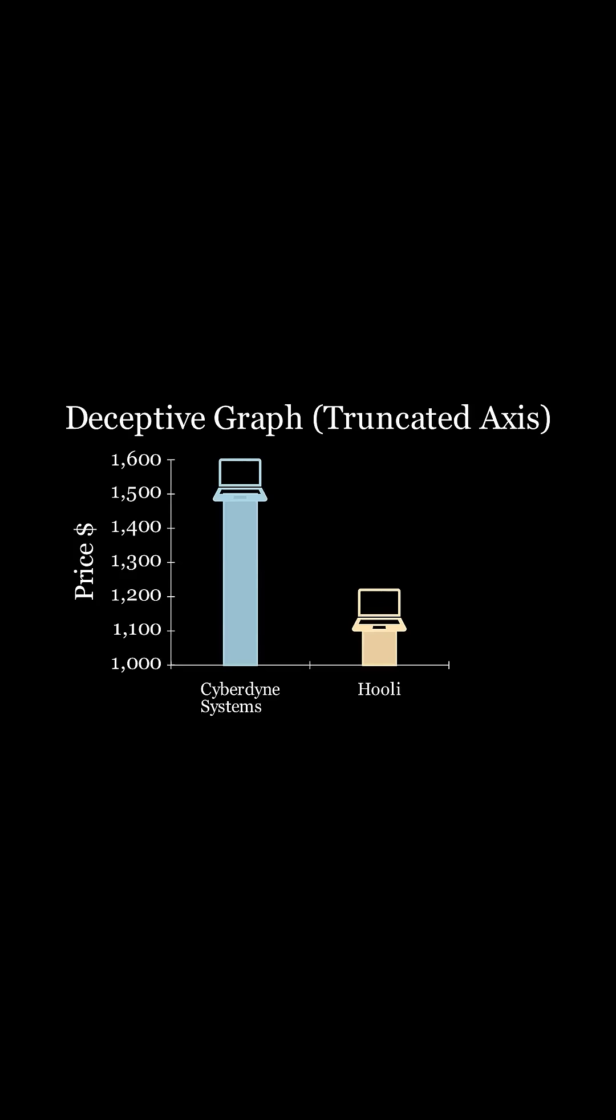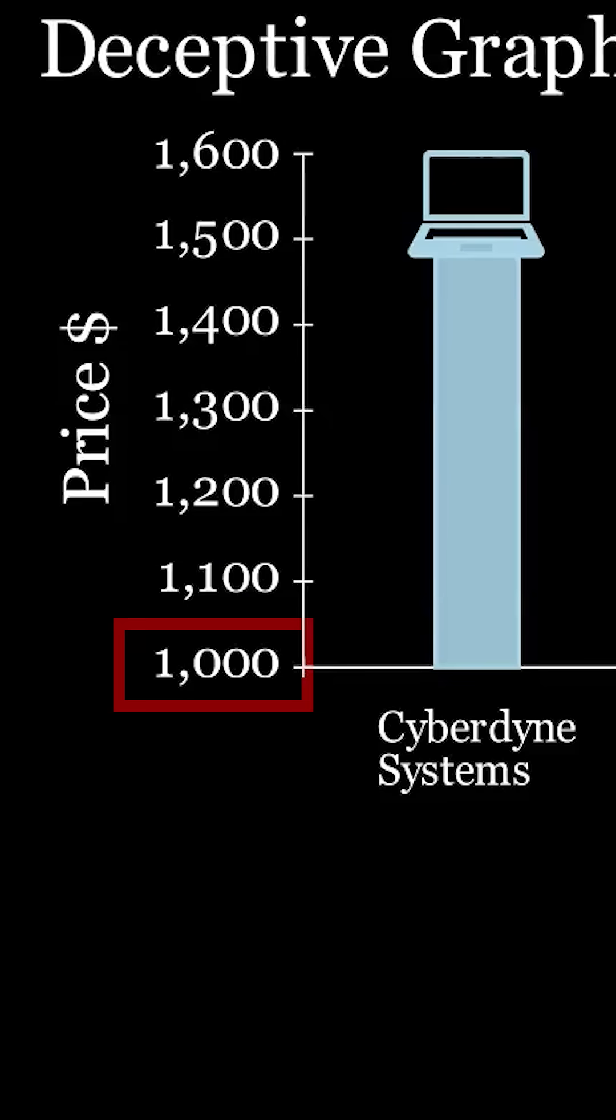Here, I have the bar chart comparing the prices of the laptops. We can see that the Hooli laptop is cheaper, but what is wrong with this graph? If we zoom in on the y-axis, it starts at $1,000. This makes the Hooli laptop look cheaper than it actually is.